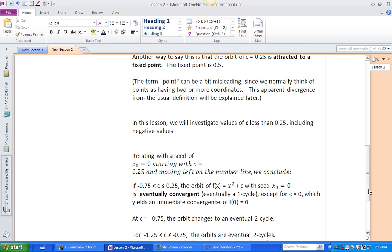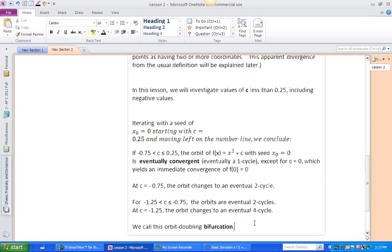At C equals negative 0.75, we change over to an eventual 2 cycle. And that continues from negative 1.25 to negative 0.75, eventual 2 cycles. And at negative 1.25, we have to change over to an eventual 4 cycle. And when you double the number of cycles, that's called a bifurcation.